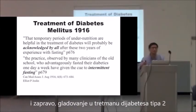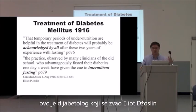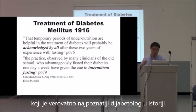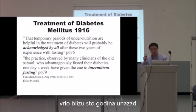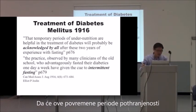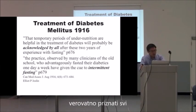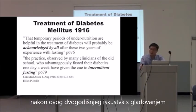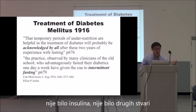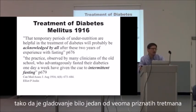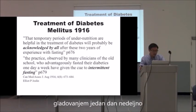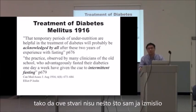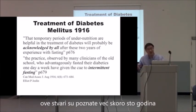Fasting as a treatment for type 2 diabetes was discussed almost a hundred years ago. Elliot Joslin, probably the most famous diabetologist in history, wrote in the Canadian Medical Association Journal in August 1916 that temporary periods of under-nutrition are helpful in the treatment of diabetes. Back then there was no drug therapy, no insulin, so fasting was a well-recognized treatment. He noted that many clinicians of the old school who advantageously fasted their diabetics one day a week gave the cue to intermittent fasting — these ideas were known for nearly a hundred years.